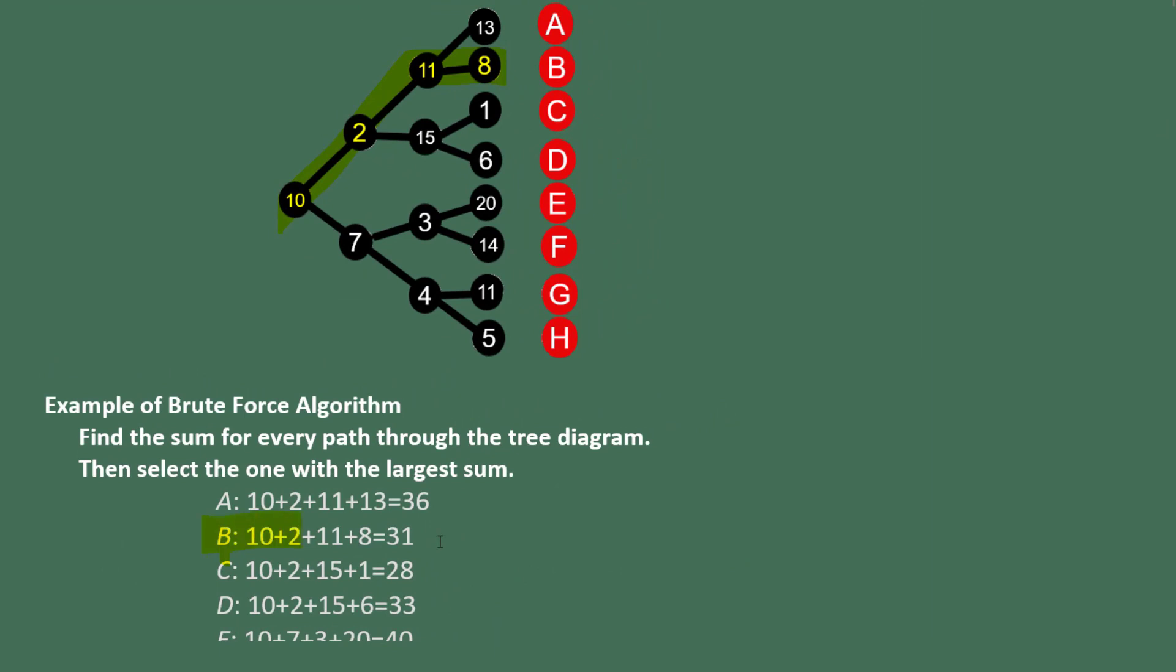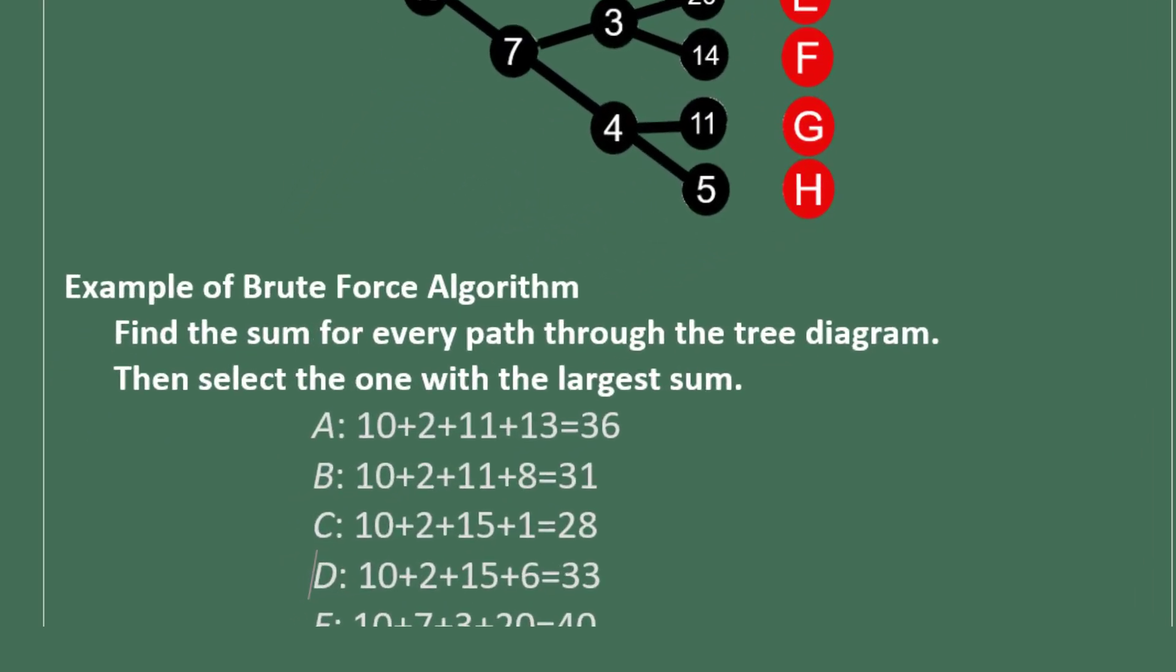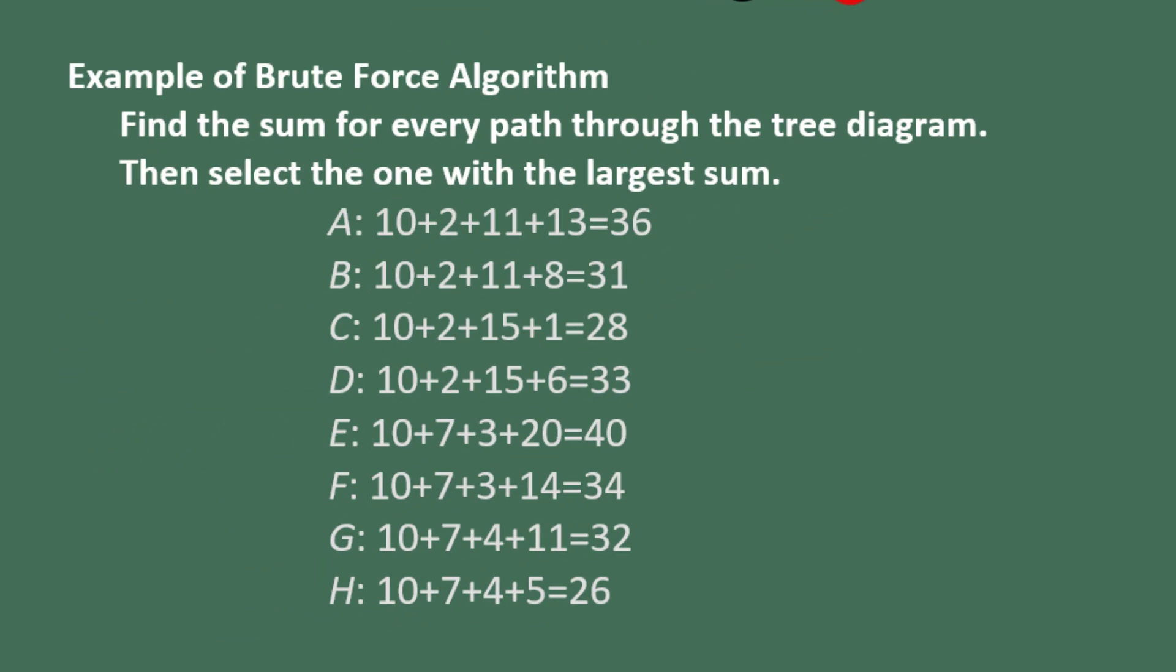Branch B went through 10, 2, 11, and 8 for a total of 31, and so on. Here is a list of all the sums that you get when you methodically go through every single branch.